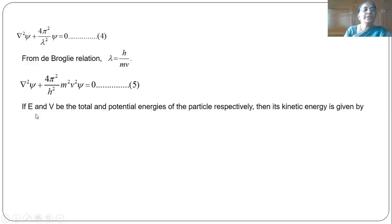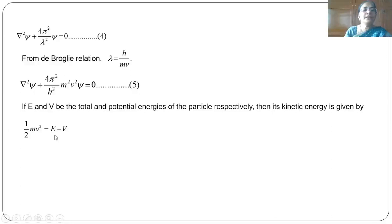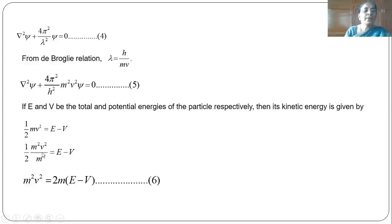Now if we consider E and V to be the total and potential energies of the particle respectively, then its kinetic energy is E minus V, so half mv² equals E minus V. Multiplying and dividing by m, we get m²v²/2m equal to E minus V, so m²v² equals 2m(E minus V).